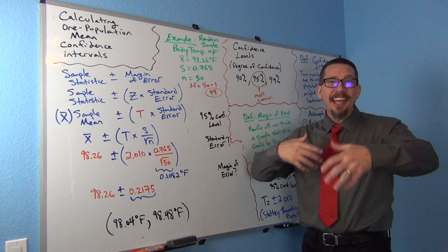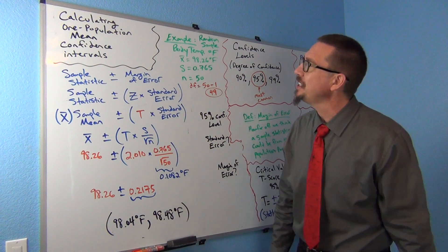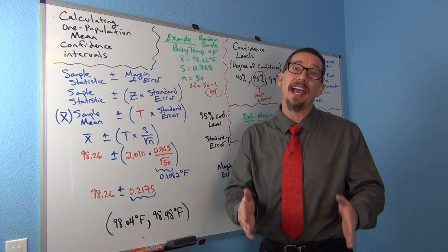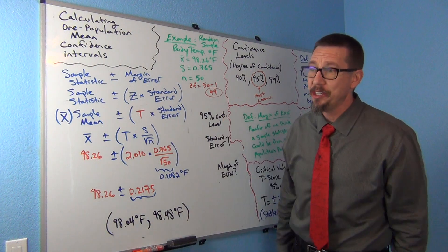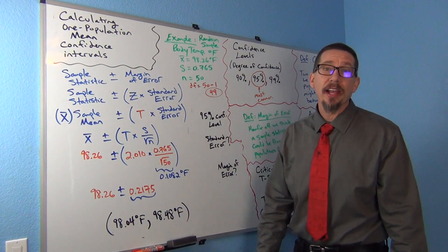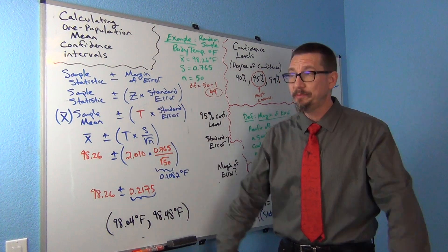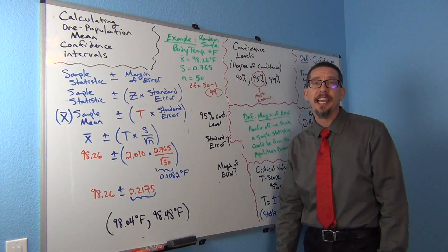So we're still working on how these confidence intervals get calculated. Today we're looking at the mean average, which is the most common average out there. If you're trying to figure out the mean average of a population, what do you do? We're going to be looking at that today.